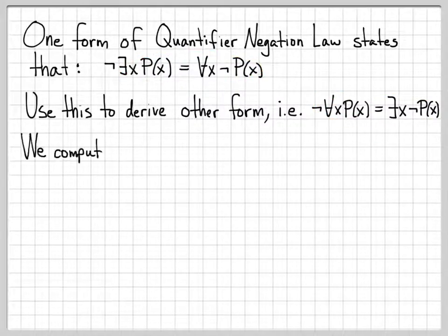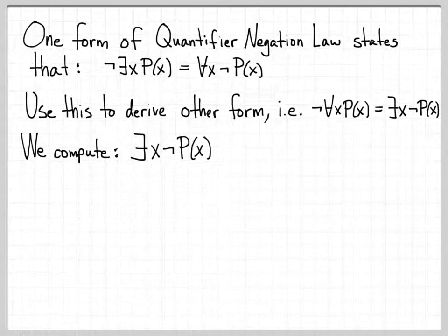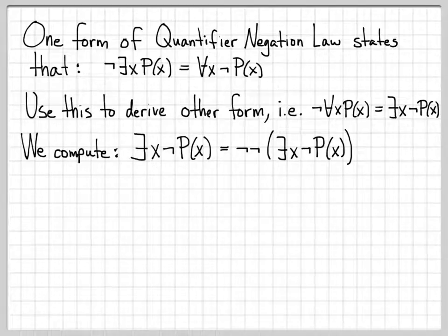So how can we do that? Let's go ahead and do a little computation. Let's start off by computing there exists x not P of x. Well, that is equal to not not there exists x not P of x. So I've thrown just a double negation out front.